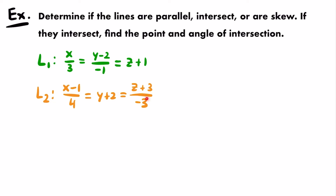Next, we have a similar example: determine if two lines are parallel, intersect, or skew, and if they intersect find the point and angle of intersection. Both lines are given in symmetric form. We first find direction vectors for each line. For symmetric equations, the direction vector components come from the values in the denominators.